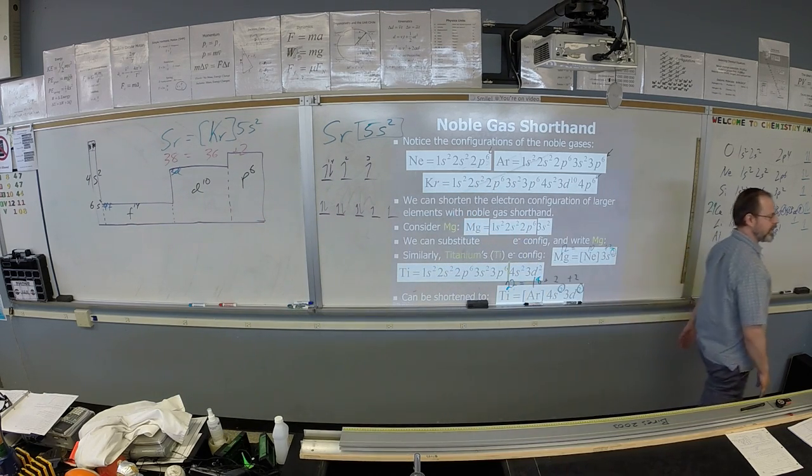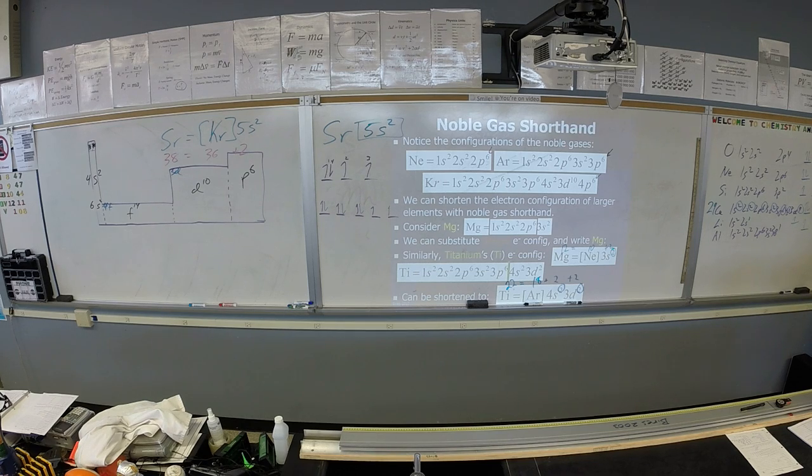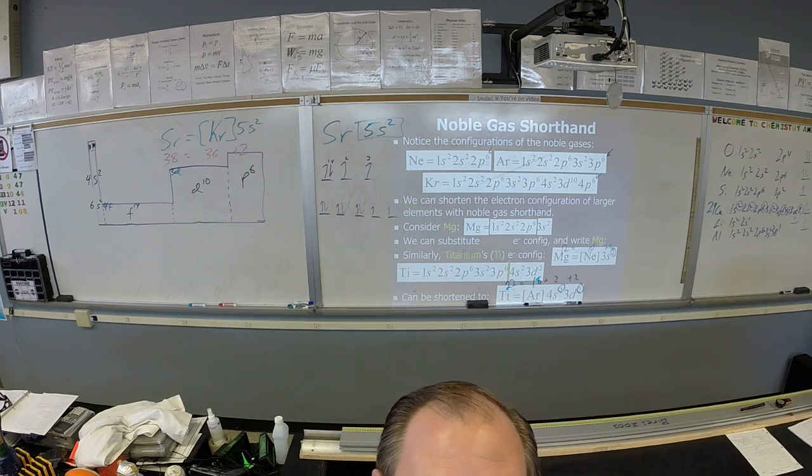Okay, that's noble gas configuration. Tomorrow, actually tomorrow we'll practice, and then Friday we'll learn the very last thing for electron configuration, and that is what happens when the noble gas or when the atomic number is not the same as the number of electrons.